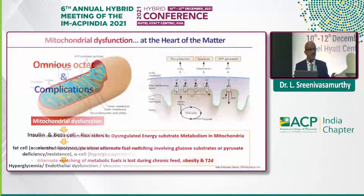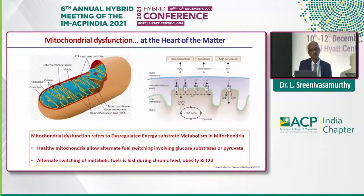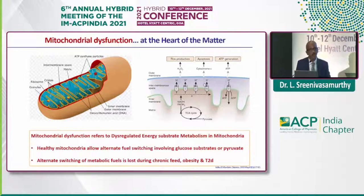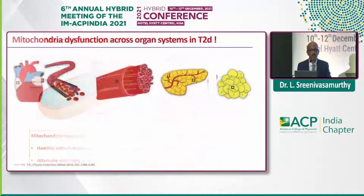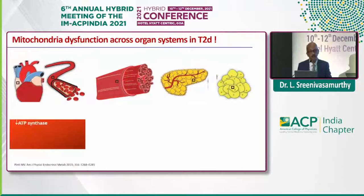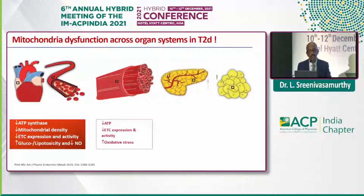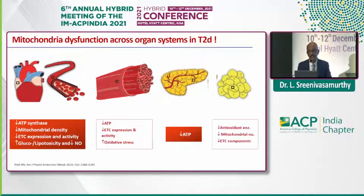We know the mitochondria is the kitchen of the cell — it releases ATP molecules. This dysregulation in the metabolic switching, because in the fed state and in obesity or the hyperglycemic state there is a fuel switching, means metabolic flexibility is deranged. This alternative switching of metabolic fuel is lost during chronic fed state and in metabolic syndrome like obesity. This happens across organ systems — the cardiovascular system, skeletal muscle system, and even at the level of the pancreas — resulting in lesser ATP release and pushing the oxidative stress.